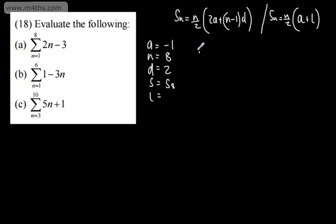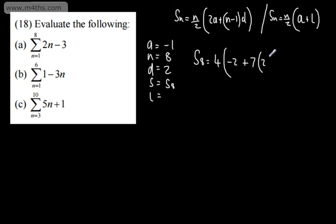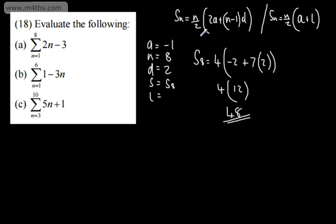Substituting in, the sum of the first 8 terms is 8 over 2, which is 4, times (2 lots of A, which is negative 2, plus n minus 1, which is 7, multiplied by d, which is 2). That gives 4 times (negative 2 plus 14), which is 4 times 12, giving us 48.